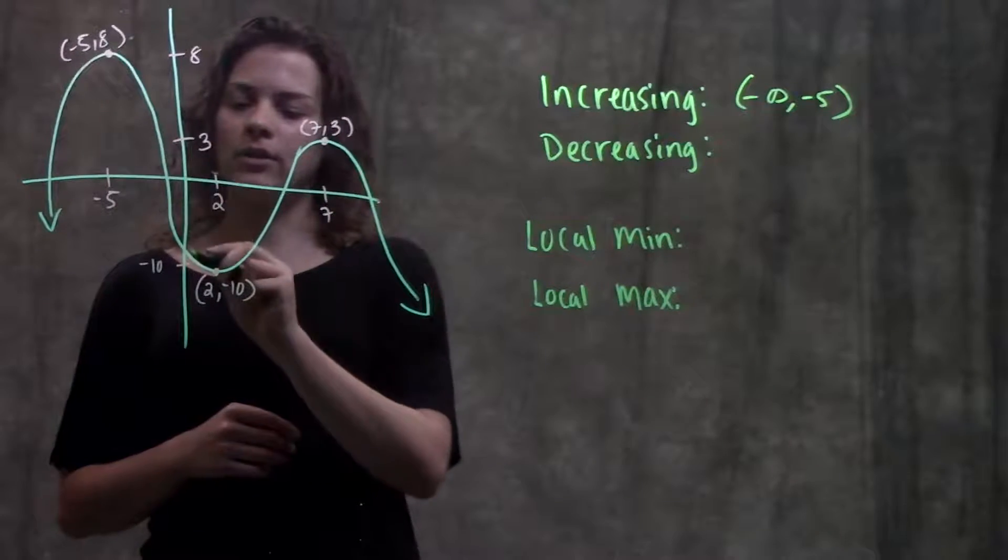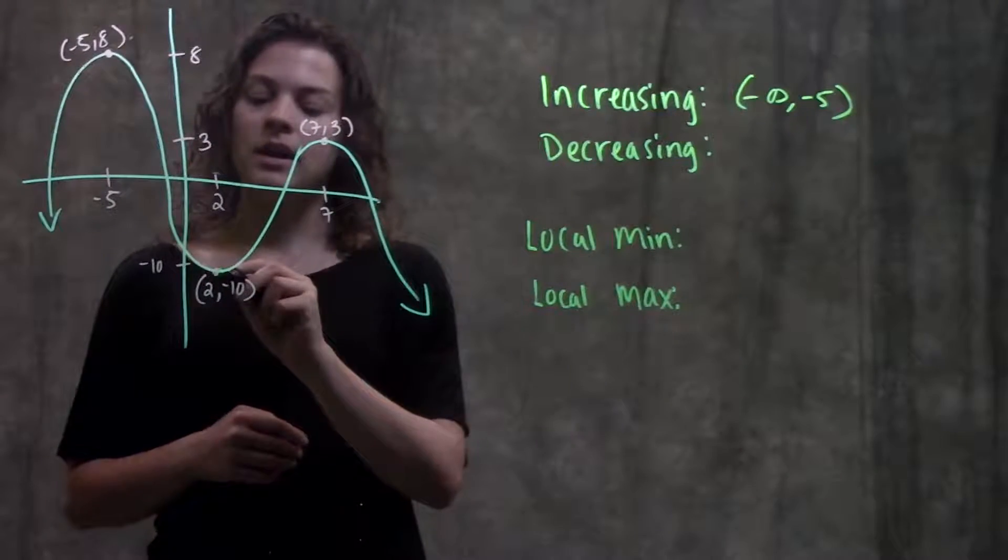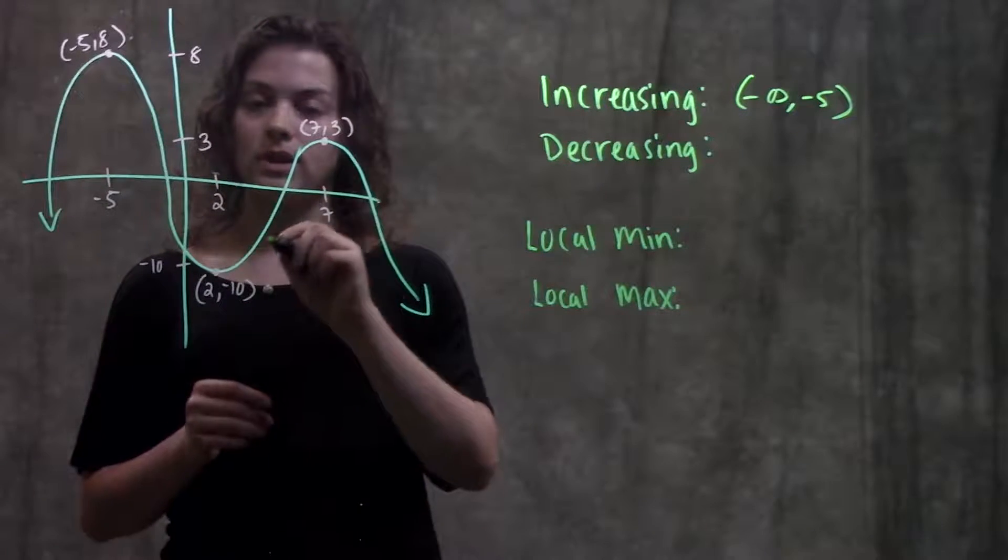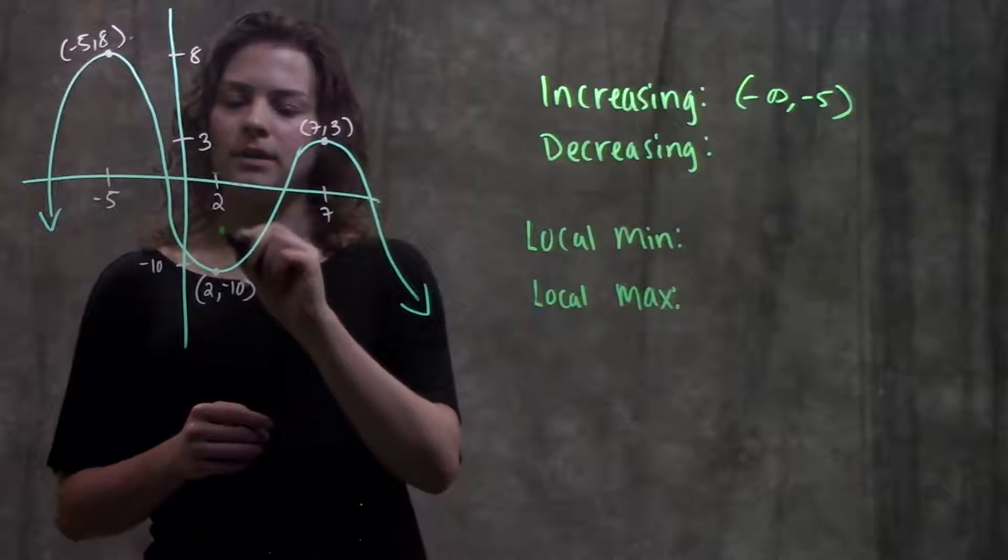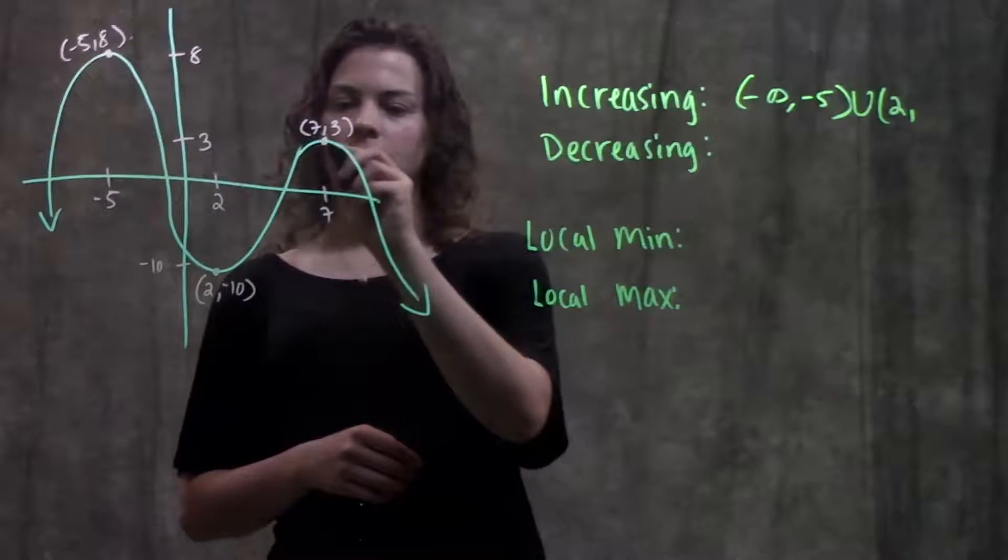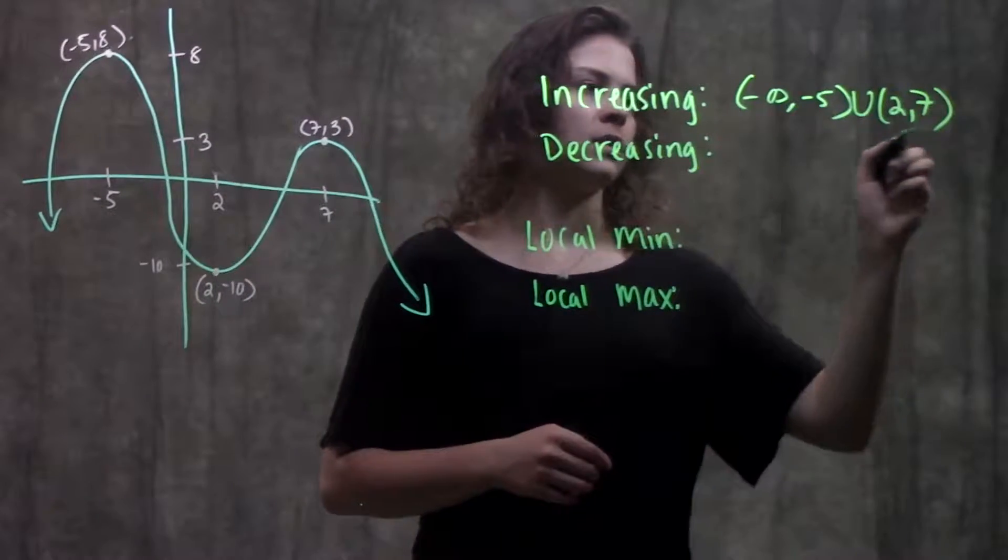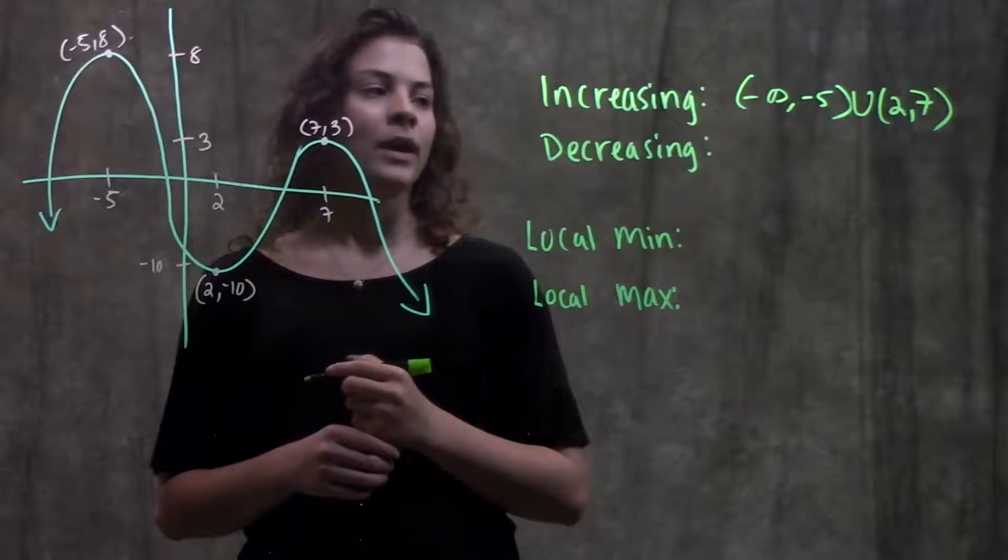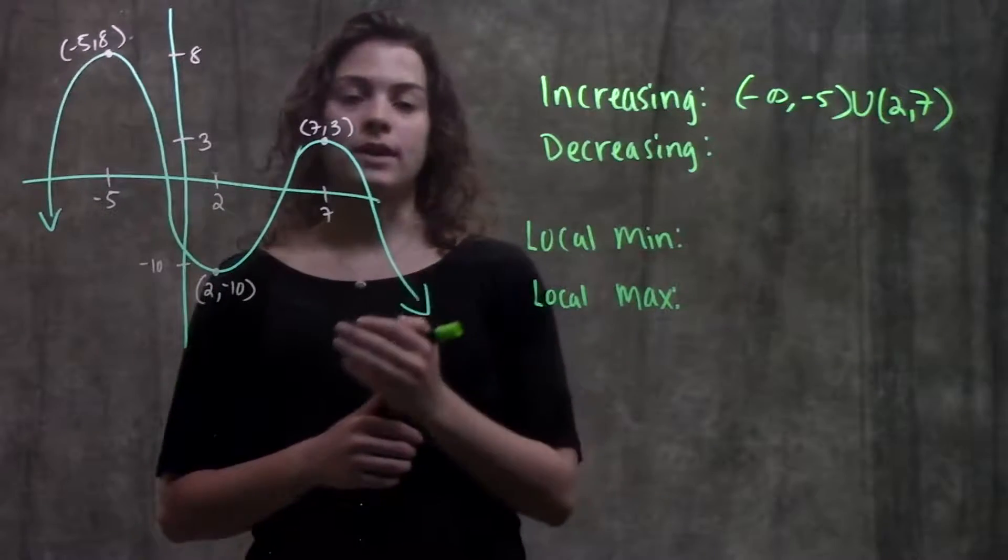Is it increasing on any other intervals? We see it's decreasing here, so all of a sudden at this point we have this positive slope again, or the function is going up again, and that happens from x equals 2 to x equals 7. We see that after that, our function is decreasing again.